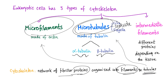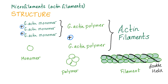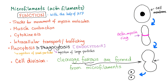First, microfilaments — also known as actin filaments. They start as monomers combining together to form G-actin polymers, which then combine to form actin filaments. The actin filament is a double helix — just like DNA. The functions of microfilaments include providing tracks for movement, muscle contraction, cell movement, and cytokinesis.